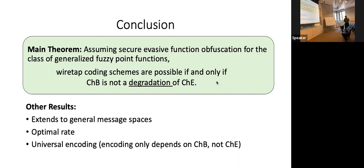It turns out you can have many, many stages of hybrid arguments — we keep changing little things one at a time — and prove in this way that eventually everything is hidden. But it's non-trivial.